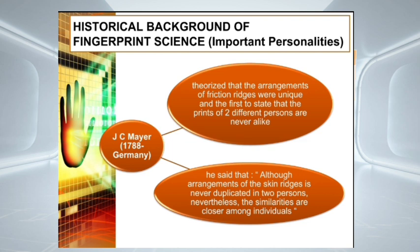Next is J.C. Mayer, or Johann Christoph Andreas Mayer — the pioneer of the principle of individuality. He is actually the first scientist to recognize fingerprints as unique. He theorized that the arrangement of friction ridges was unique and was the first to state that prints of two different persons are never alike. In his book, he said that although the arrangement of skin ridges is never duplicated in two persons, nevertheless the similarities are closer among individuals.